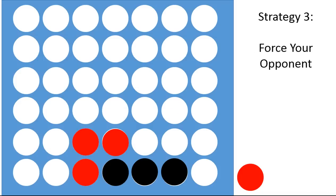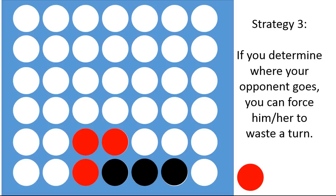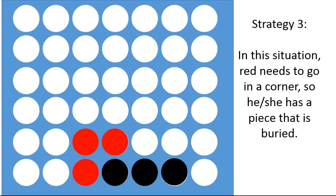Number three, force your opponent. In this situation here, the black pieces have forced the red piece to go somewhere that's totally separated from the other pieces. Notice that red would basically have to go in the corner. If you can force your opponent to do something that's not very good, then basically you're forcing your opponent to waste a turn.